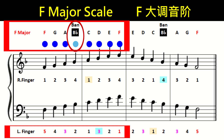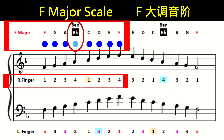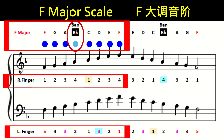The left hand still uses common fingering, something we're very familiar with already: 5, 4, 3, 2, 1, 3, 2, 1. However, the right hand is different: 1, 2, 3, 4, 1, 2, 3, 4. In other words, the right hand doesn't use finger 5 anymore. Both hands together use 9 fingers to play — so this is called 9-finger fingering.